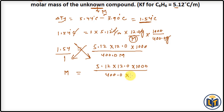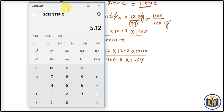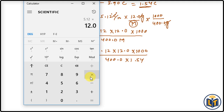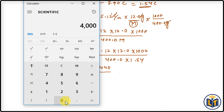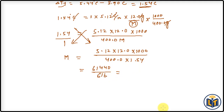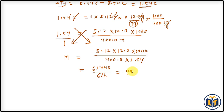Multiplying the numerator values: 5.12 times 12.0 times 1000 gives 61,440. The denominator is 400.0 times 1.54, which gives 616. Dividing 61,440 by 616 gives us 99.74. So the molar mass of the unknown compound is 99.74 grams per mole.